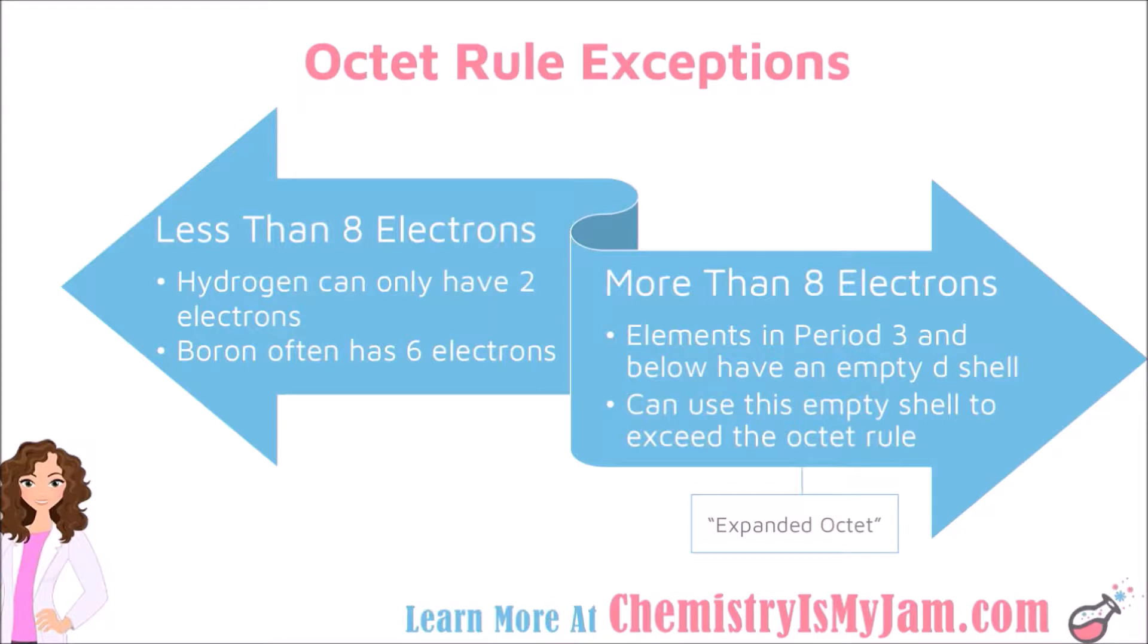Another common example is boron. Boron is very often stable with only 6 electrons, so it is very common to find boron with just 3 single bonds. That would be boron with only 6 electrons or hydrogen with only 2. Those are exceptions to the octet rule. Let's look at some examples and then we will come back and look at exceptions where they have more than 8 electrons.